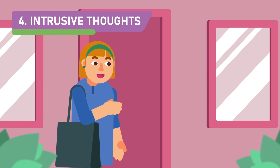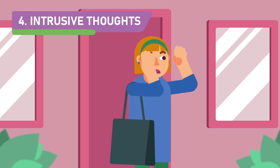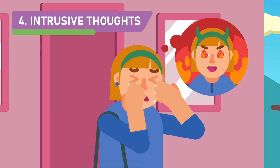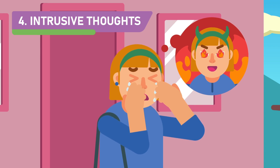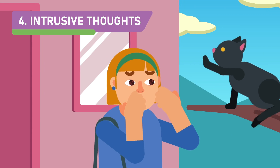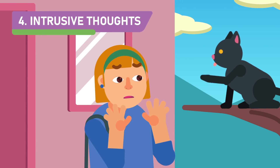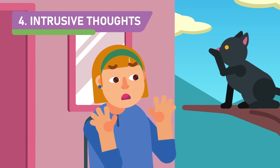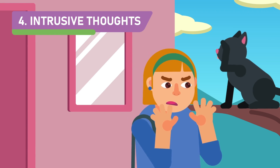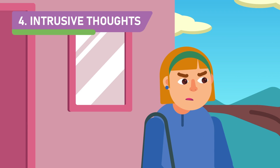The fourth classification is obsessive and intrusive thoughts. The thoughts can vary wildly, such as fear of having done an unforgivable sin or scrupulosity, myth-related beliefs such as believing some colour or number can bring bad luck, and thoughts of doing violence-related actions.